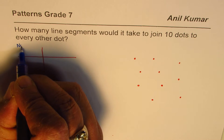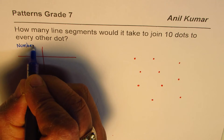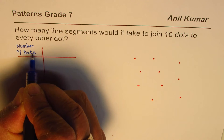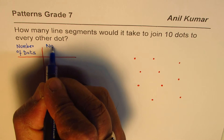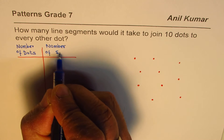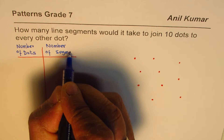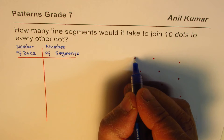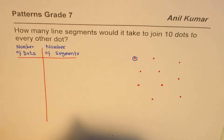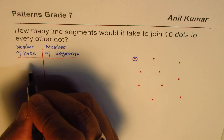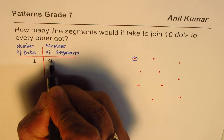On one column we have the number of dots, and on the other column we have the number of segments. Let's begin with one dot — if I have one dot, in how many ways can I join it to others? Well, there's no other, so for one dot the number of segments is zero.